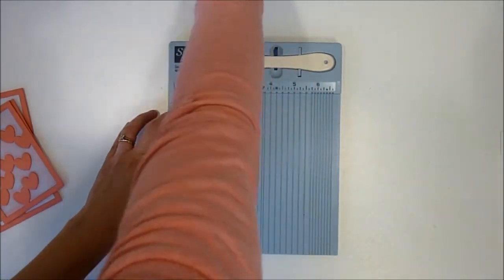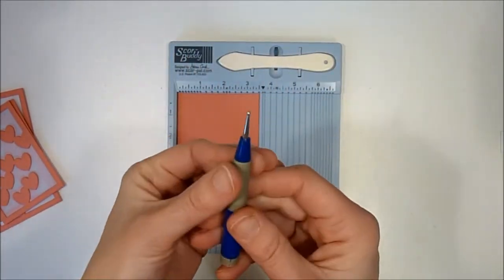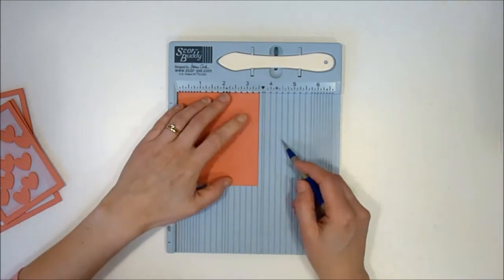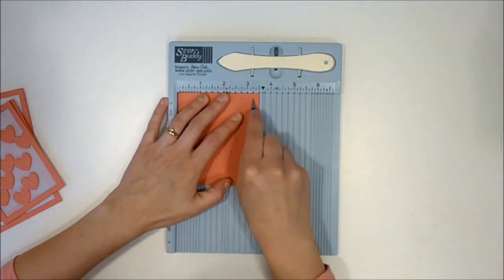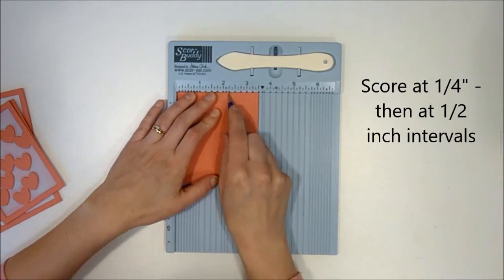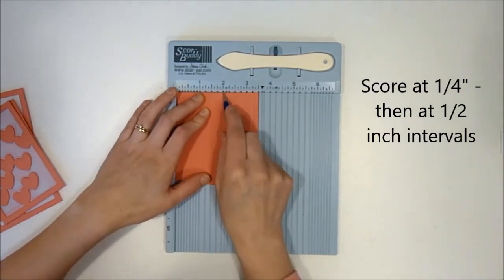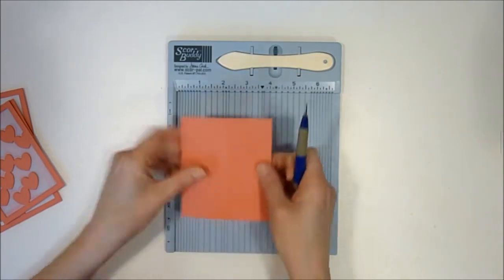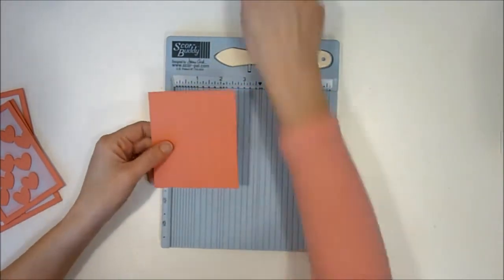I'm going to score it first off at the quarter-inch mark with my little scoring tool, and then I'm going to score at half-inch intervals after that. The reason for this is, as soon as I finished all this scoring, I scored a little rough and split my cardstock, so I did another one.